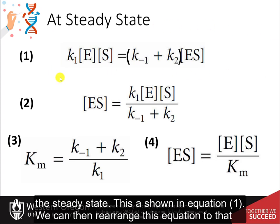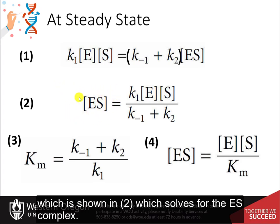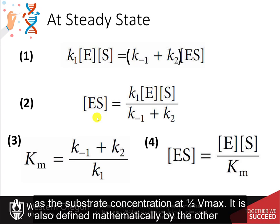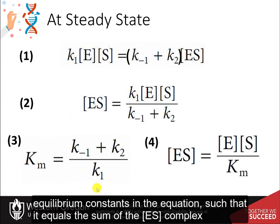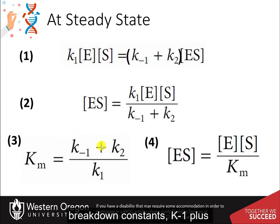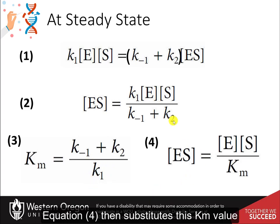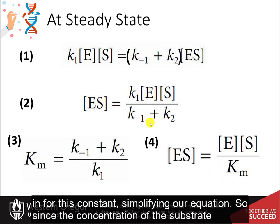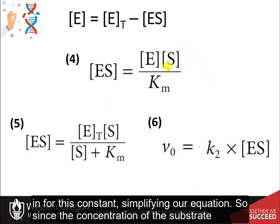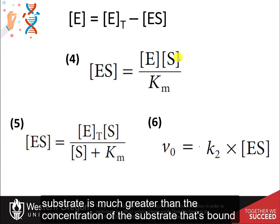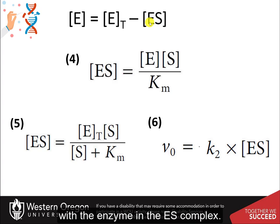We can think about other mathematical ways of representing the formation of ES as K1 times the enzyme concentration and the substrate concentration, and the rate of ES breakdown as a combination of breaking back down into enzyme plus substrate — dependent on the K-1 rate constant — and breaking down in the forward direction to enzyme plus product — dependent on K2. We can set these two equations equal to each other at steady state. This is shown in equation 1. Rearranging gives equation 2, which solves for the ES complex. We can then substitute in the Km value, defined as (K-1 + K2) / K1, simplifying our equation.